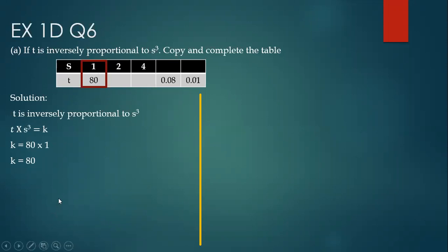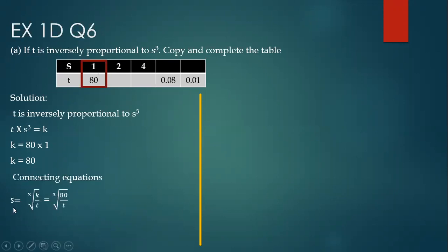Since we have to find both values s and t, we will make two connecting equations. So s will be the cube root of k upon t — because you take t as the denominator on the other side and take the cube root to remove the cube. Replace k with 8t to get your connecting equation. For t, take s-cubed as the denominator on the other side: t equals k upon s-cubed.